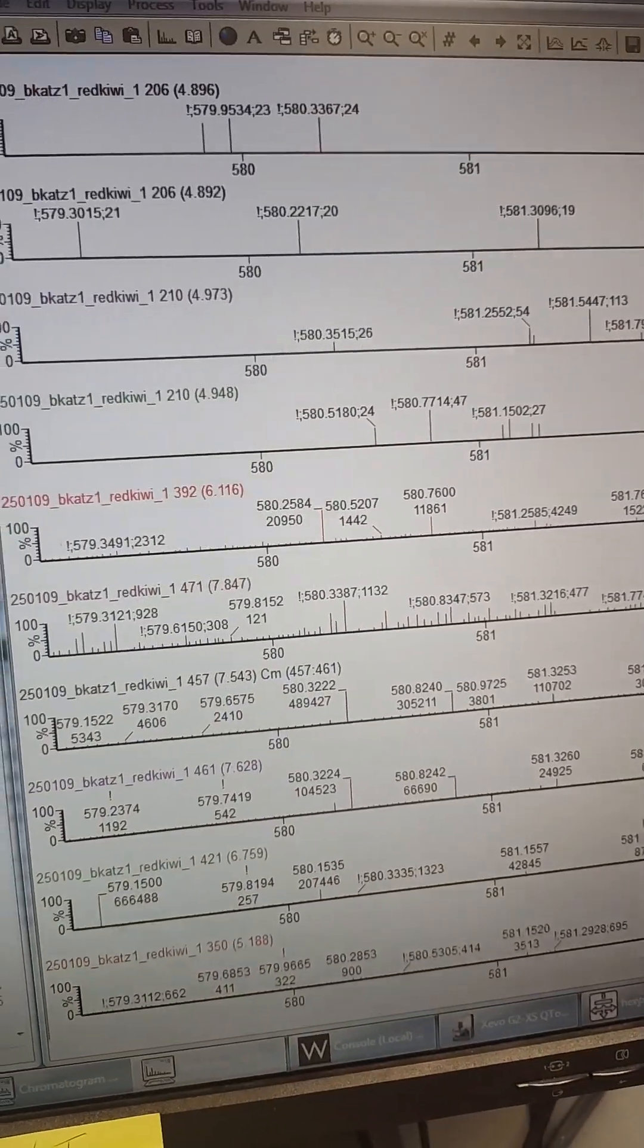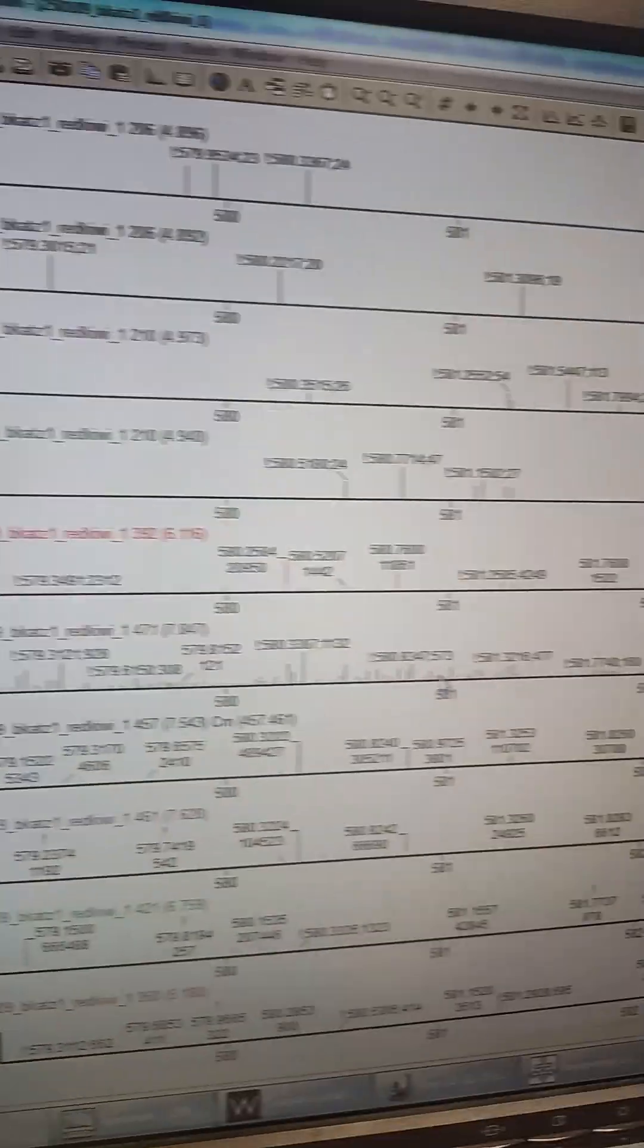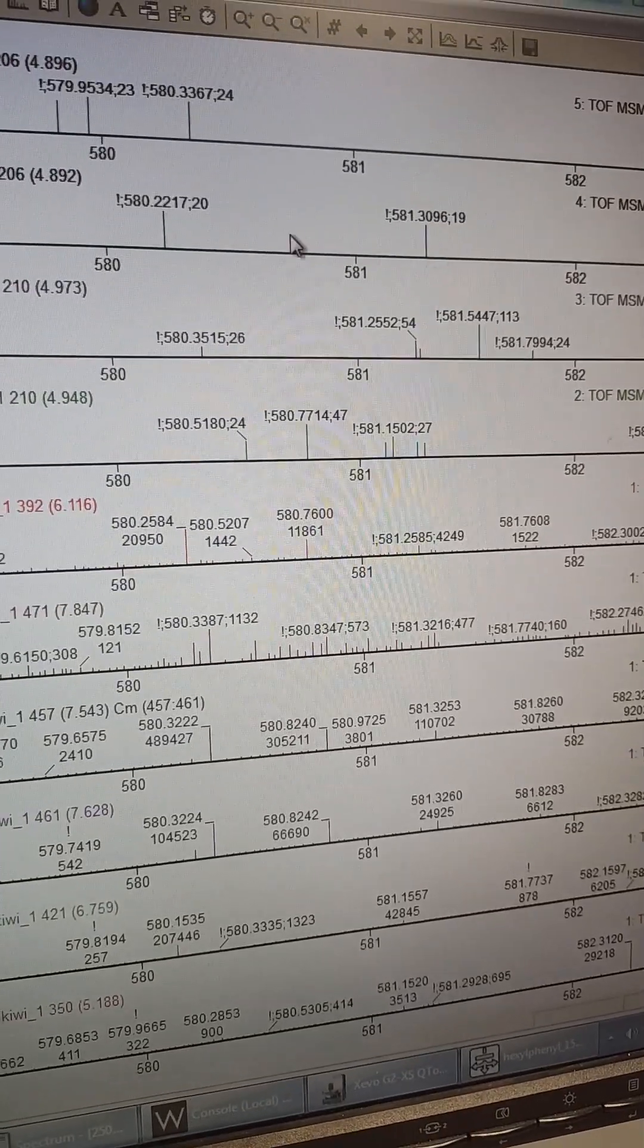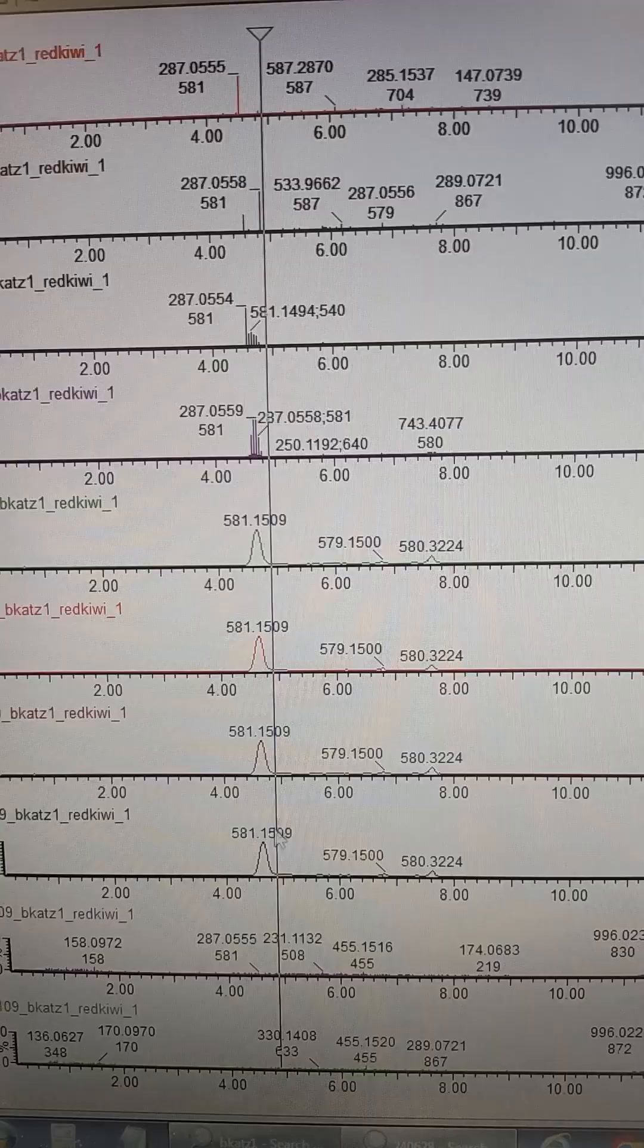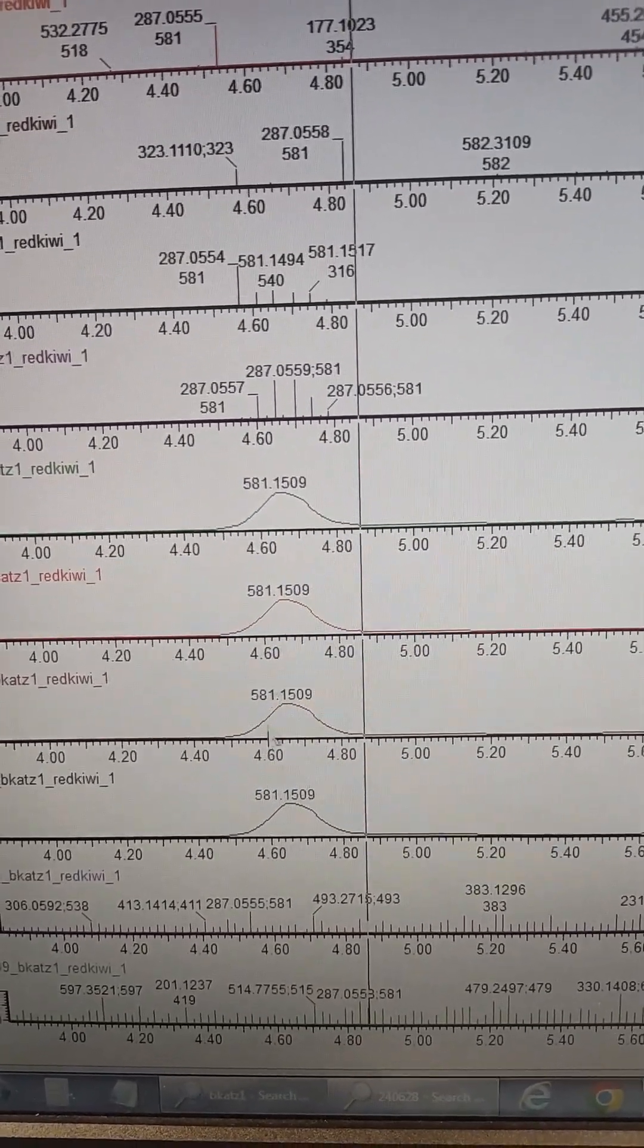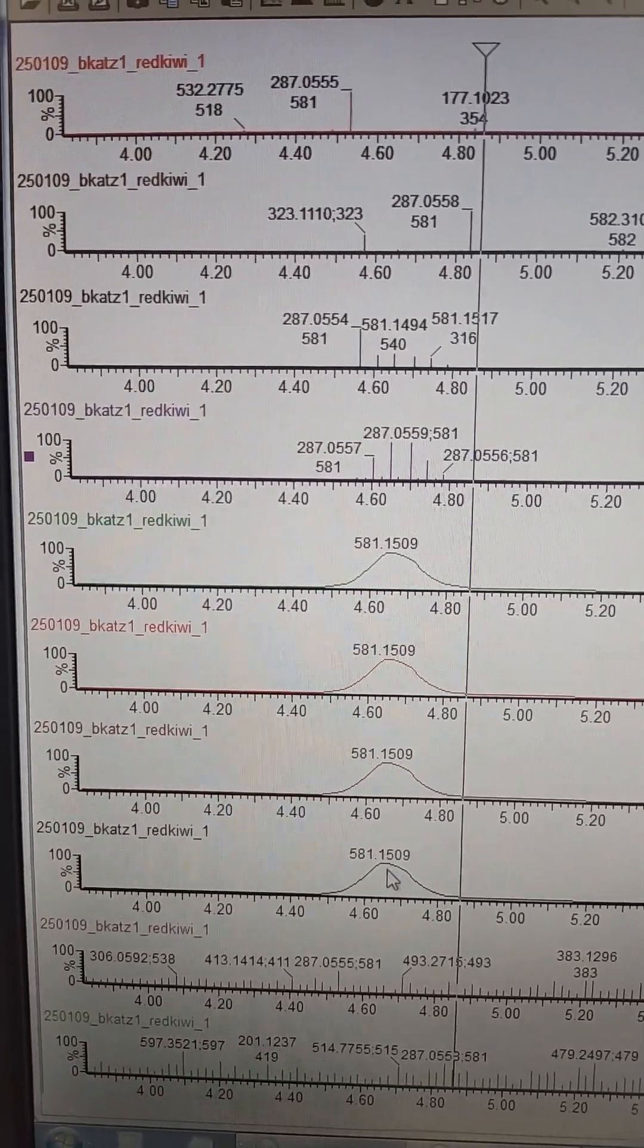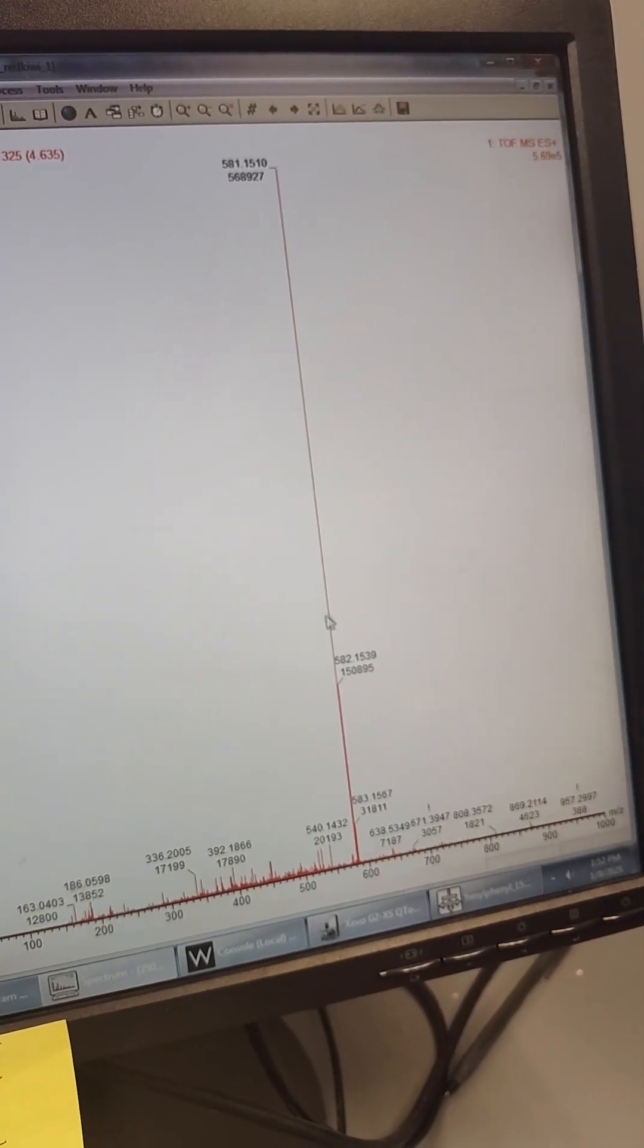The way we're going to do this is we're going to pull up both the MS and all the MS/MS data. Because we don't know if it's fragment. We're going to extract out this area around 581. So it's supposed to be 580.9. And so then we're going to see areas where we're not only seeing it in the MS1, we're also seeing it in the MS2. I'm liking this one right here.